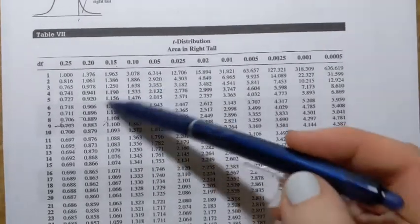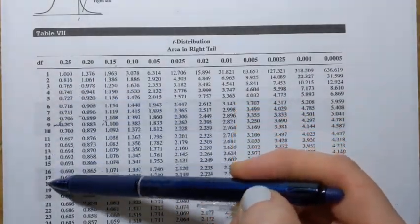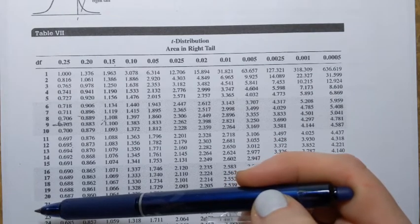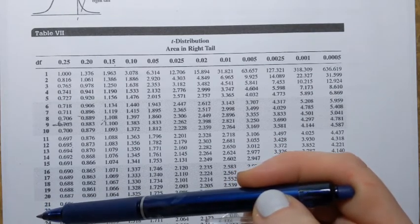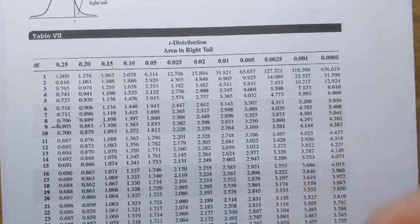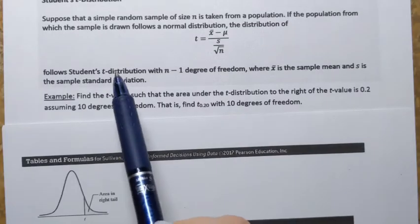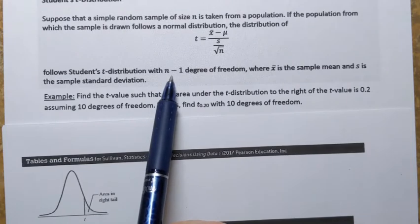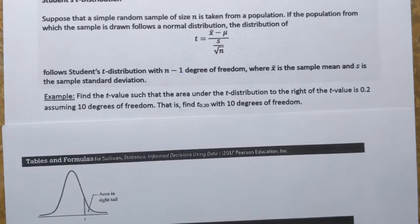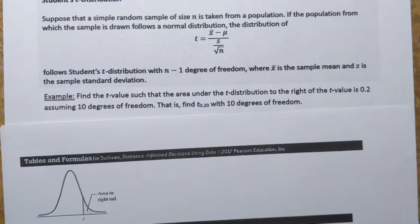And what we have in the first column is what we call degrees of freedom. Now degrees of freedom is tied to the sample size. Degree of freedom is always one less than the sample size. In the description of Student distribution, it's written here. So degree of freedom is n minus one.